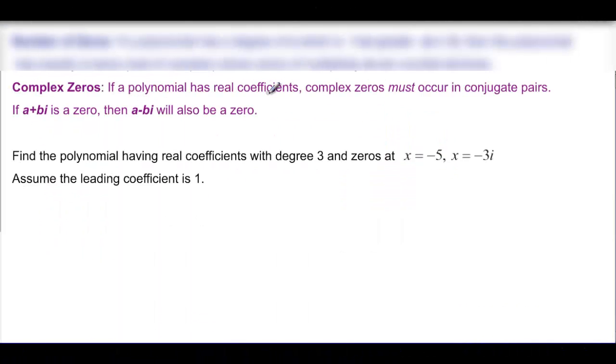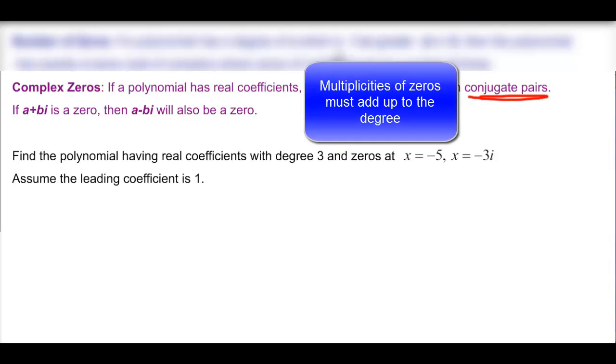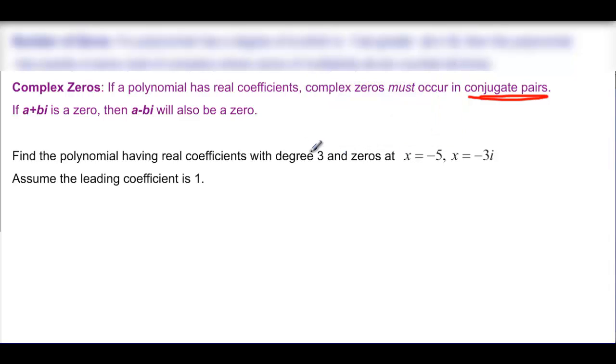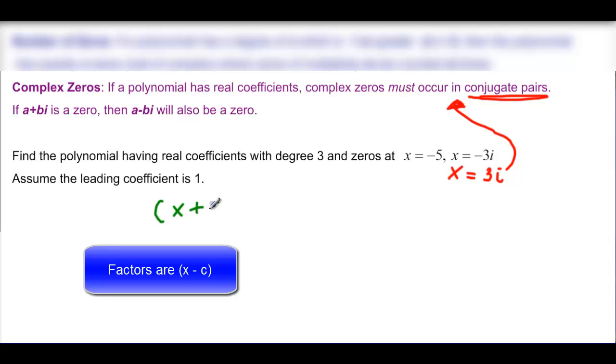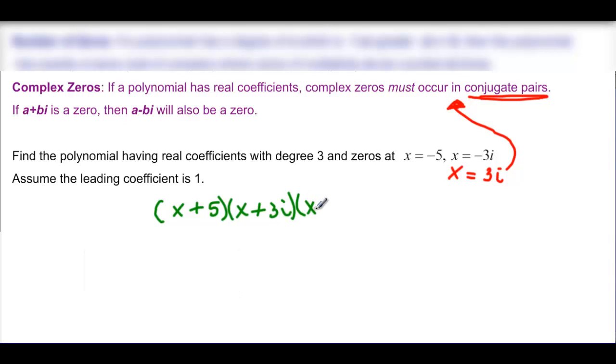The complex zeros. If a polynomial has real coefficients the complex zeros must occur in conjugate pairs. That's the important part right there. So you'd have a plus bi and a minus bi. So it's asking us here to find the polynomial having real coefficients degree 3. So that means that all my multiplicities have to add up to my degree of the polynomial. So degree 3 and 0's at negative 5 and negative 3i. This tells us that we're also going to have to have plus 3i because of this definition here. So writing that x minus c, so it would be x plus 5. And then we have x plus 3i and its conjugate x minus 3i.